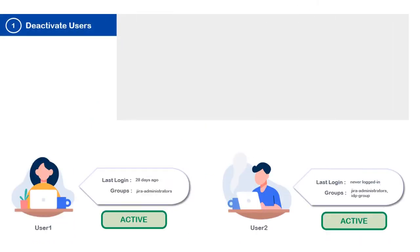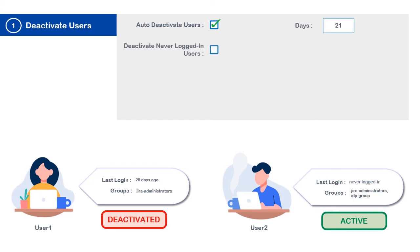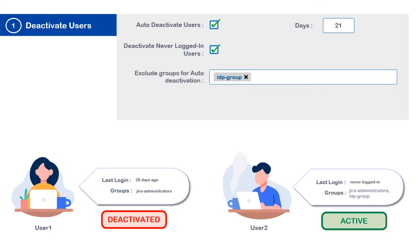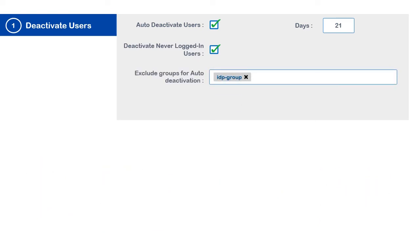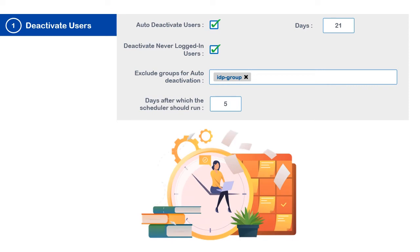The settings can be updated to auto-deactivate users who have not logged in for a specific number of days, or users who have never logged in, excluding specific group members. You can also specify the number of days as an interval at which these actions should be carried out.